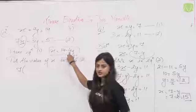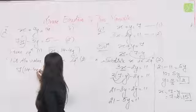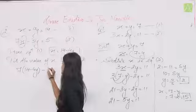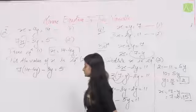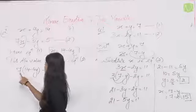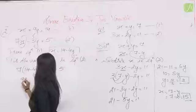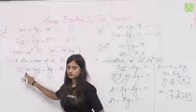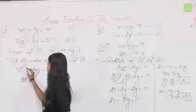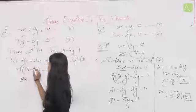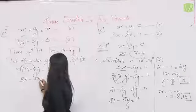7(14 − 4y) − 3y = 5। इसे solve करने पर: 98 − 28y − 3y = 5, so 98 − 31y = 5।